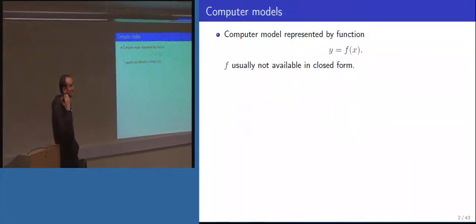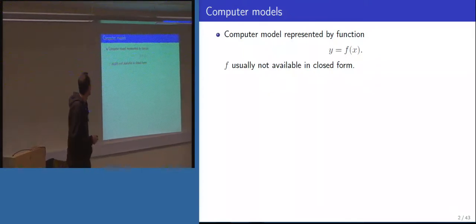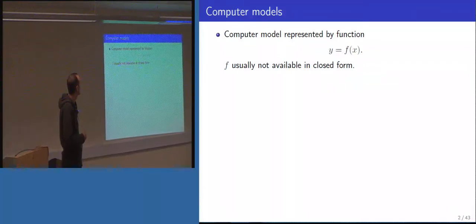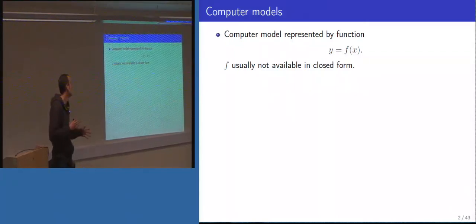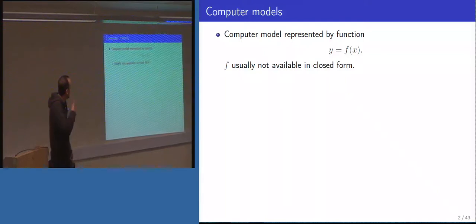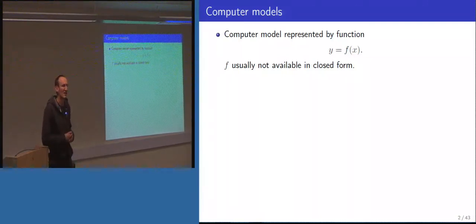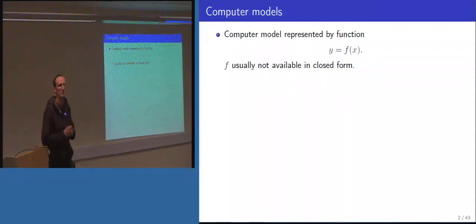Let's start with what I mean by a computer model. Very simply, we think of this as a function: we've got some inputs x, some outputs y, and a computer model that takes your inputs and gives you the outputs. Usually the relationship between inputs and outputs is sufficiently complex that we don't have a closed-form expression — maybe y is calculated by solving a system of differential equations. x is typically a vector, with applications involving around 20 to 30 parameters.